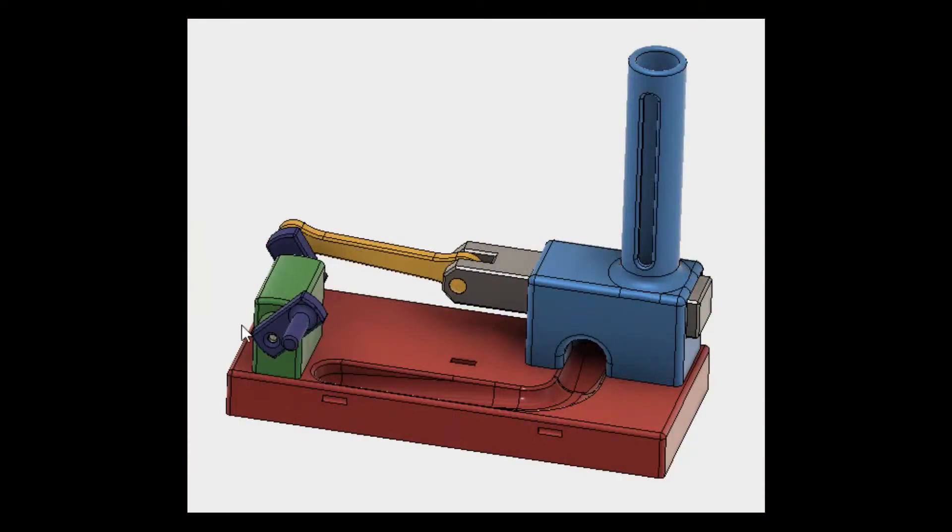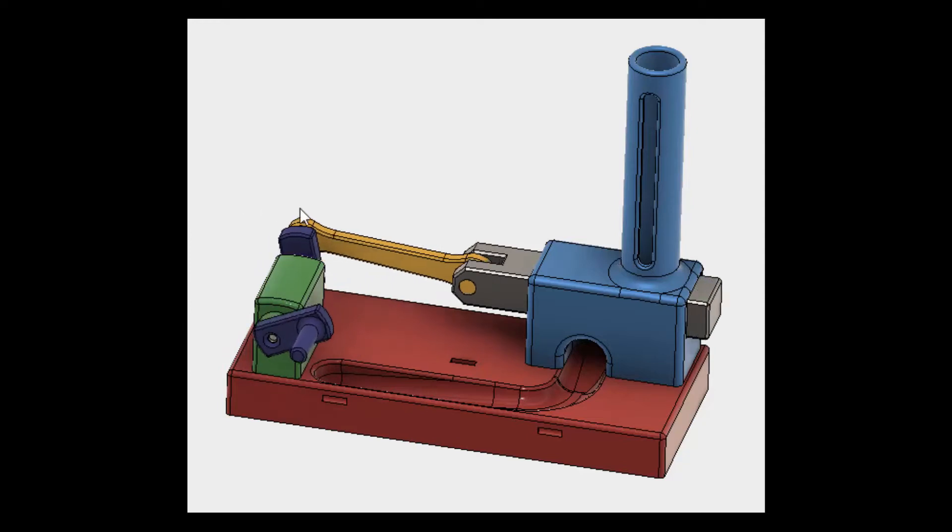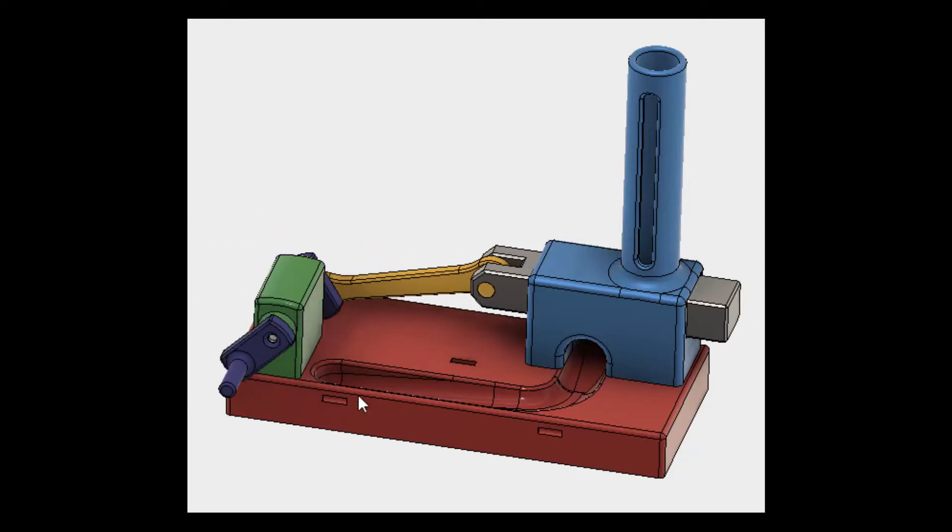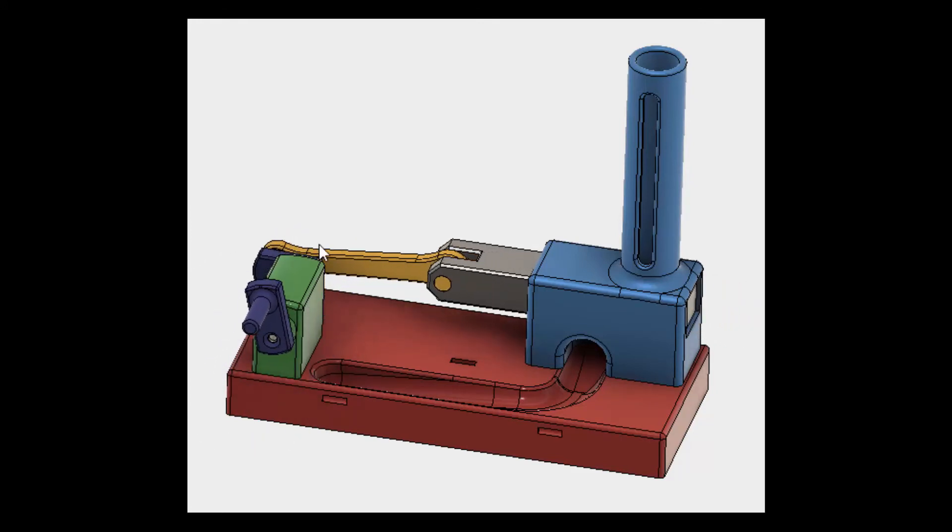Fusion 360 also allows you to link together individual components in a mechanism. This is an example where by turning the handle the whole mechanism is simulated to be operating.